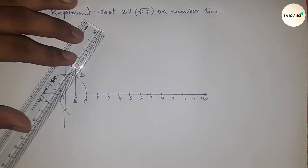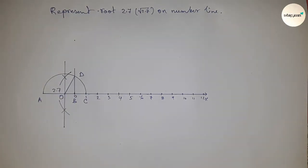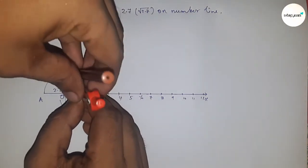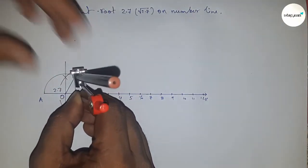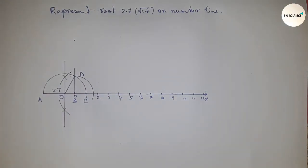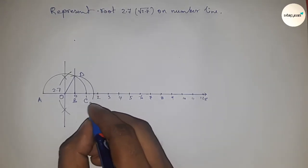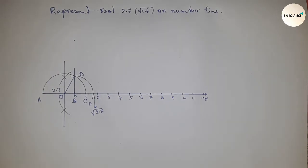Now take the distance BD by compass and draw an arc which meets the number line at point P. This is the representation of root 2.7 on the number line.